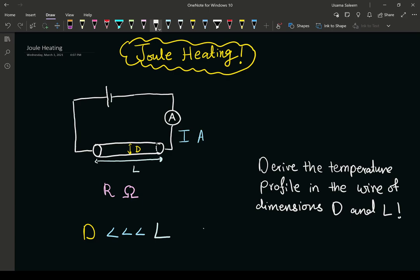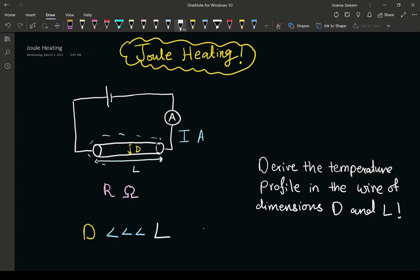In this case we have a cylindrical wire of dimension d and l with a constant resistance R, and the current as given by the ammeter reading is I amperes. We have to derive the temperature profile.